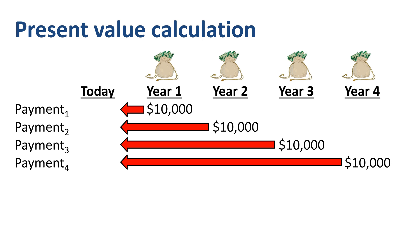Let's set the value of each payment at $10,000, use an interest rate of 5%, and perform the calculation for four periods.